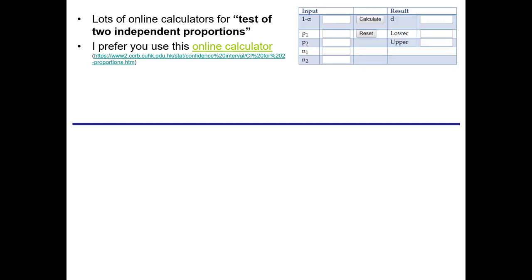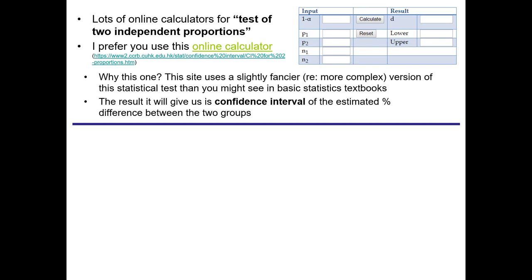The calculator has inputs on the left-hand side — the values we plug in to run the test — and results on the right-hand side. The reason I recommend this particular calculator is it runs a slightly more complex version of the basic independent proportions test, and more importantly it gives us a confidence interval result, which is quite convenient and useful when we write up our results.